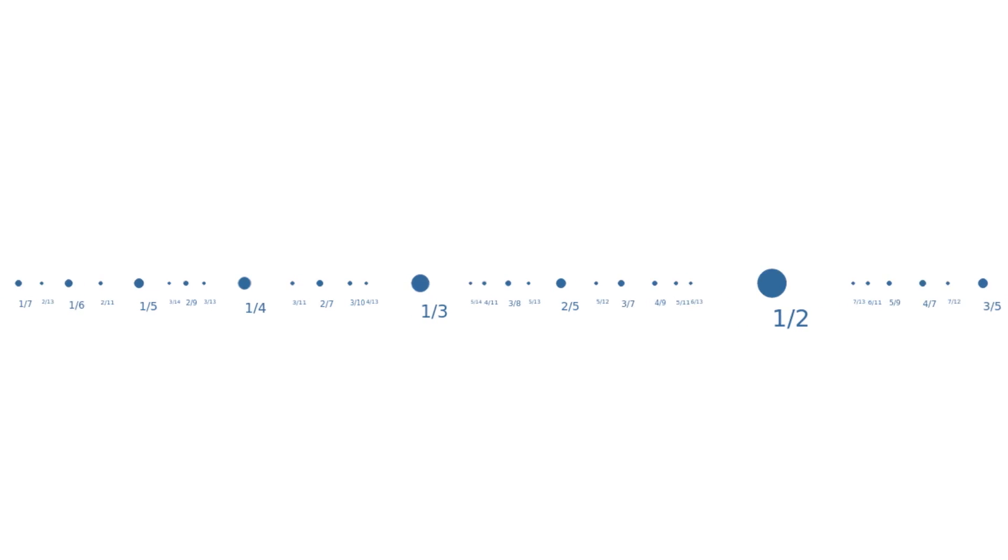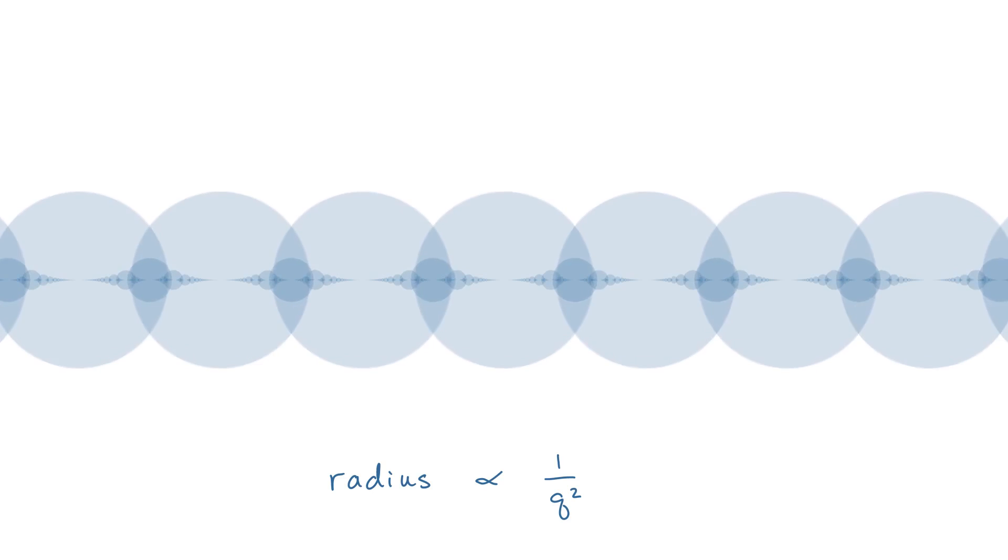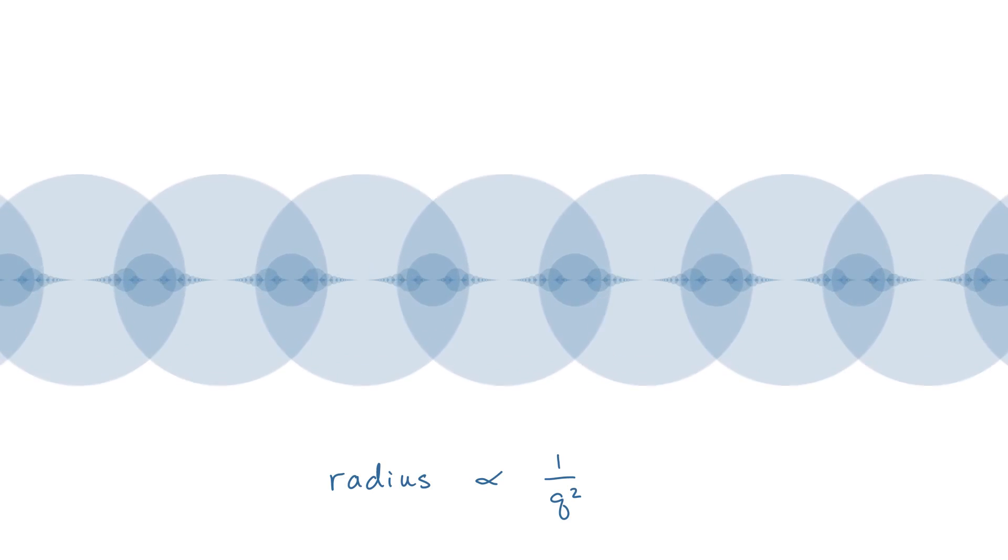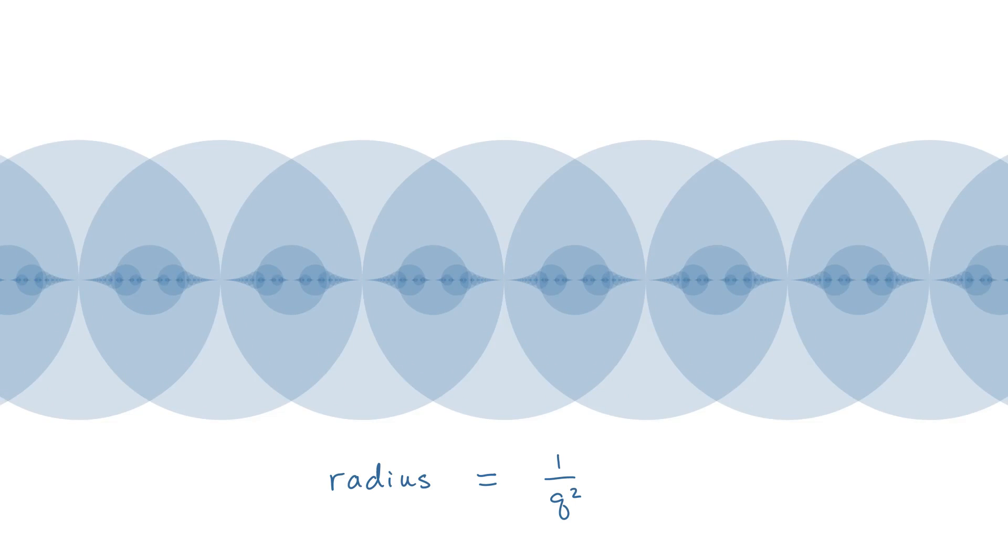We get a beautiful beaded necklace of rational numbers. Now I'm going to pull a little trick. I'm going to expand these little disks on the rational numbers. The radius is proportional to the inverse of the square of the denominator, so larger denominator means smaller disk, and I'm scaling up that constant of proportionality. I'm going to stop when the radius is exactly 1 over the denominator squared.